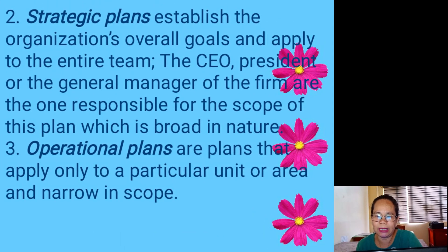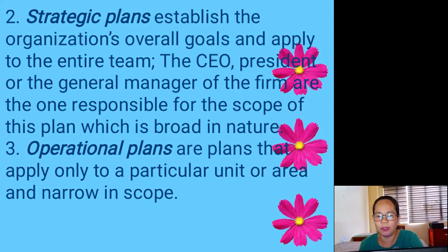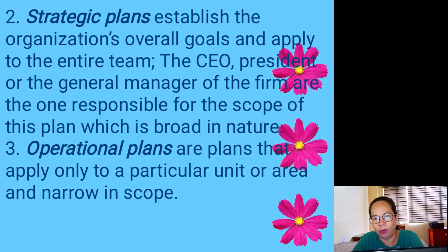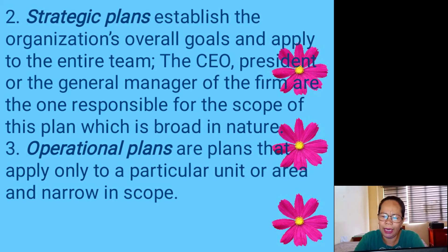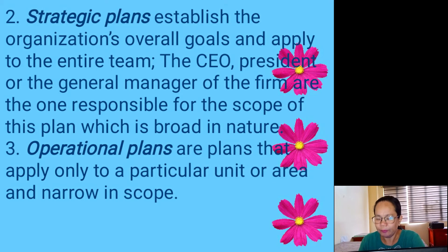Next, we have strategic plans, which establish the organization's overall goals and apply to the entire team. The CEO, president, or general manager of the firm is responsible for the scope of this plan, which is broad in nature. If you are a CEO or president of a business, you need a strategic plan — showing how you will get ahead of your competitors. Operational plans apply only to a particular unit or area and are narrow in scope.